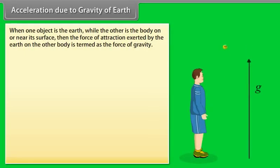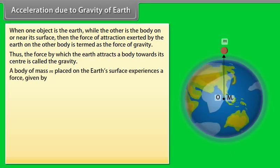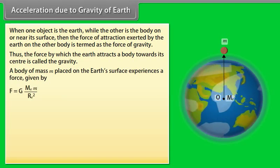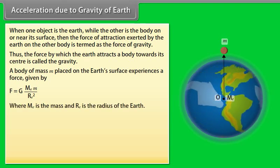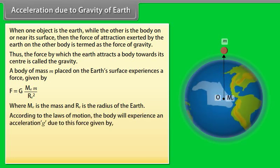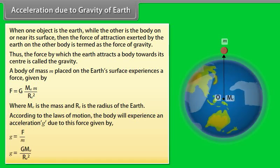Acceleration due to gravity of earth. When one object is the earth while the other is the body on or near its surface, then the force of attraction exerted by the earth on the other body is termed as the force of gravity. Thus, the force by which the earth attracts a body towards its center is called the gravity. A body of mass m placed on the earth's surface experiences a force given by F is equal to G into M e m upon r e square, where m is the mass and r e is the radius of the earth. According to the laws of motion, the body will experience an acceleration g due to this force given by g is equal to G into M e divided by r e square.